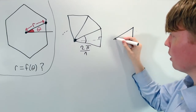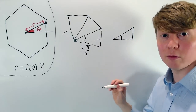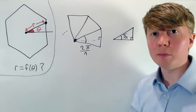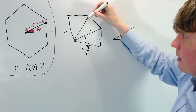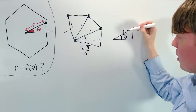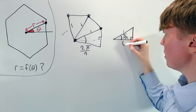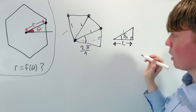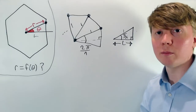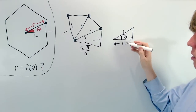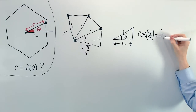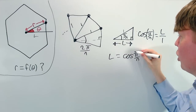We've got half of one side as a right-angled triangle, and this angle — rather than being 2π/n — is only half of that, just π/n. We also need to decide how big our polygon is, so we'll choose all distances from the vertices to the centre to be one unit, making our hypotenuse one. To find this length L, we use trigonometry: cos(π/n) equals adjacent over hypotenuse, so cos(π/n) = L/1, meaning L = cos(π/n).